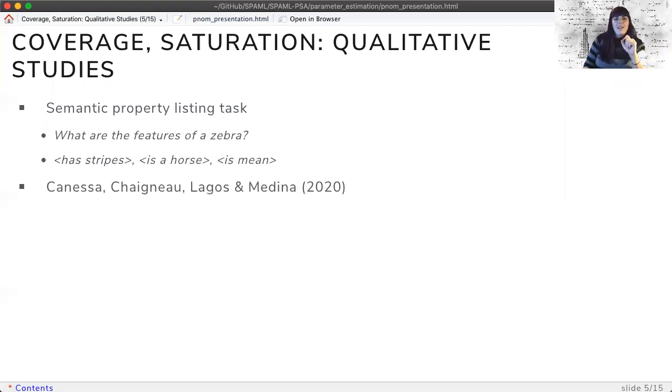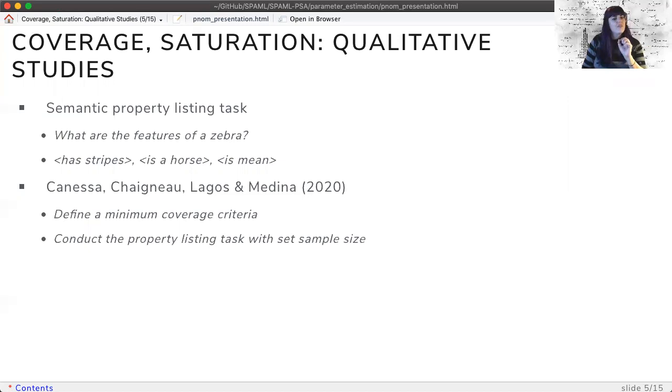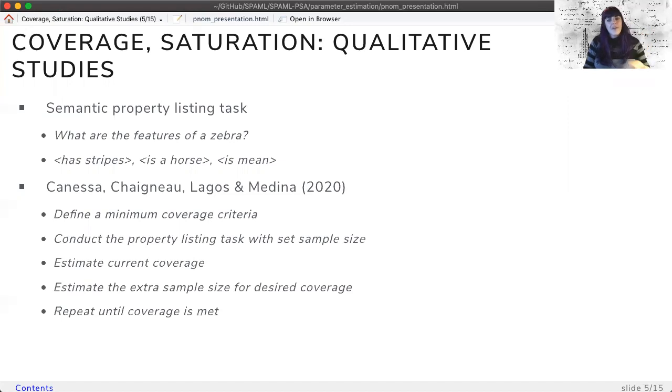I want to highlight this great paper by Knessa and colleagues that covers how to estimate the necessary sample size for these types of studies. First, you define a minimum coverage criteria in percentages. Then, you sample a small number of participants to estimate the coverage space initially. Given this current coverage space, you can then estimate the remaining sample size for your desired coverage. You repeat this process until the coverage sizes for each item have been met.